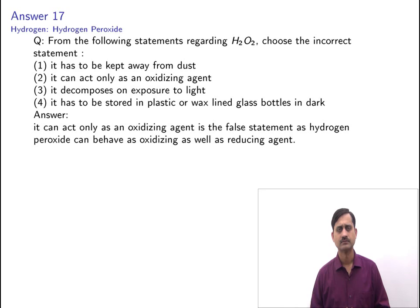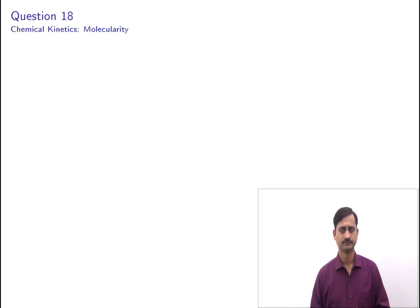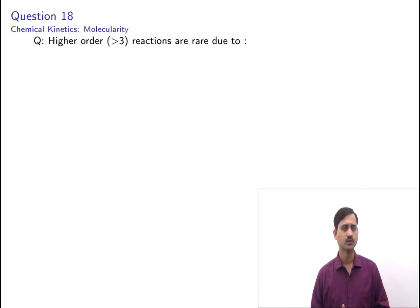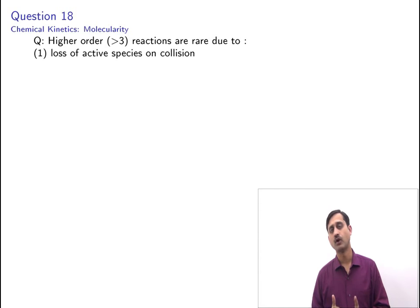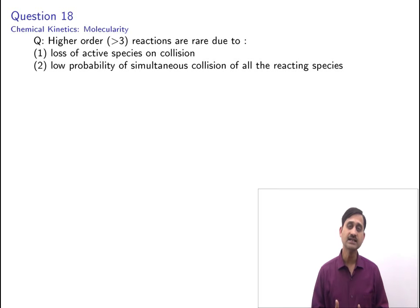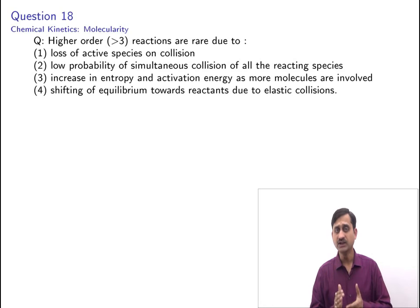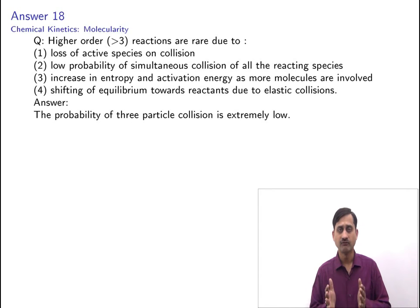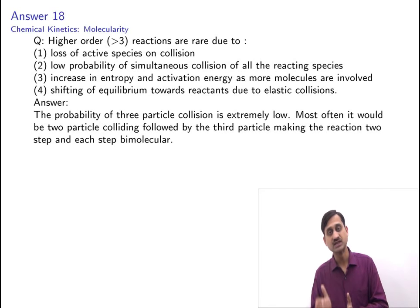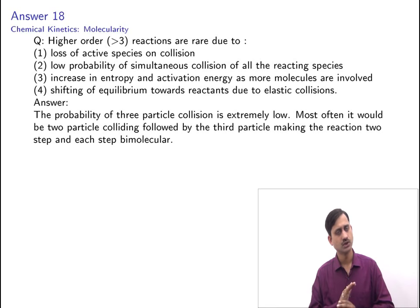The next question is from chemical kinetics, subtopic molecularity. Higher order reactions (greater than 3) are rare due to: low probability of simultaneous collision of all reacting species. The probability of a three-particle collision is extremely low — most often two particles collide first, followed by a third, making the reaction two-step with each step bimolecular. Beyond three, the probability is almost non-existent.